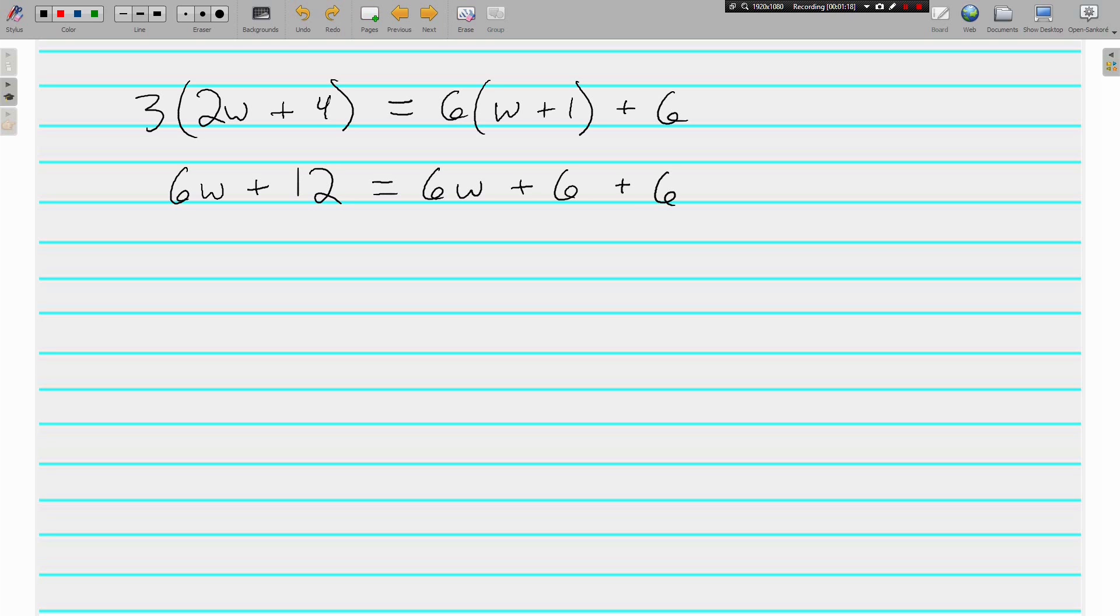Now remember from the last video, we are going to simplify each side before we do anything to both sides. On the right, we've got a positive 6 and a positive 6 that needs to be combined. The left side stays exactly how it is, but on the right we have 6w and 6 plus 6 gives us plus 12. You can see already that on the left side we've got 6w plus 12, and on the right side we've got 6w plus 12.